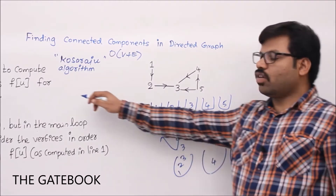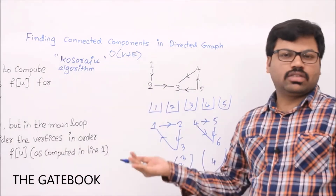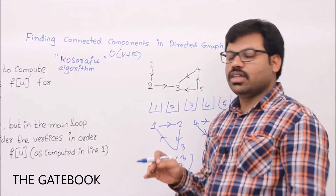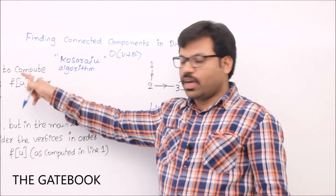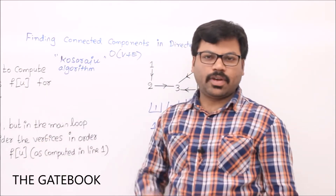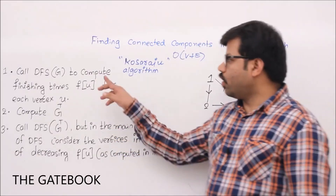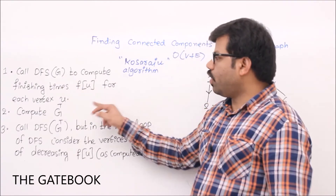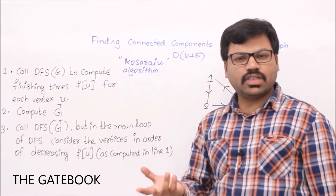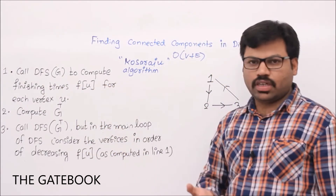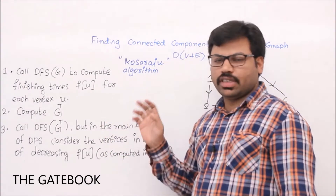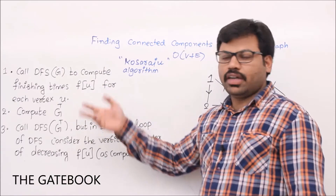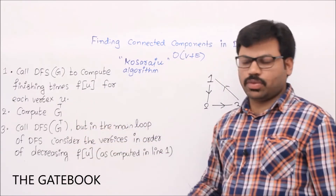Now, the following algorithm is going to compute connected components in a directed graph. The first step is calling DFS on G to compute finishing times f[u] for each vertex. After that, compute G transpose — we already know how to find G transpose. After that, call DFS again, but this time on G transpose.